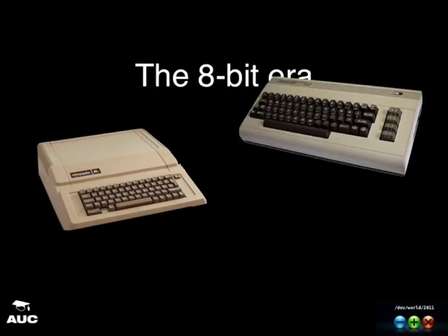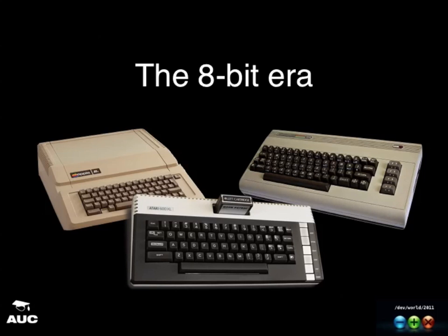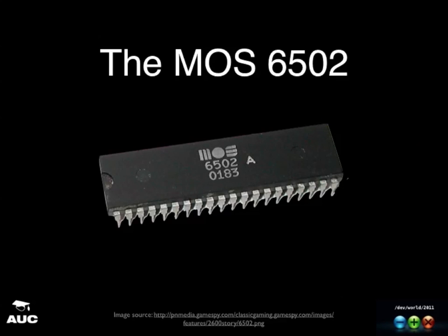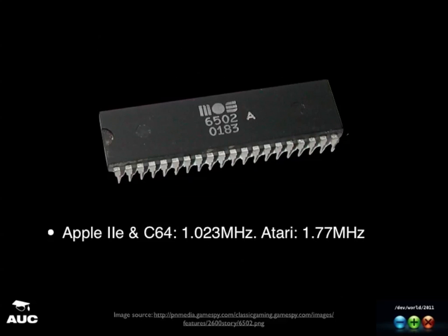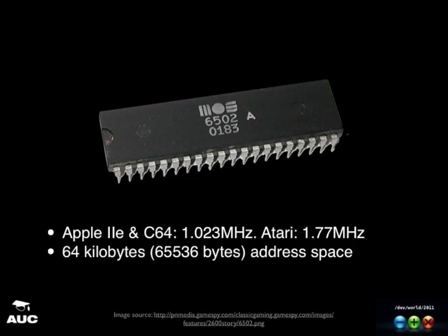So how do we manage this stuff? Let's look at the history and evolution of memory management, starting in the 8-bit era. This is the type of computer I first started programming on. The Apple IIe, the Commodore 64 — which according to the Guinness Book of World Records is the most popular computer model ever — and the Atari 600XL, the first computer I ever programmed on. All of these were based on the MOS 6502 CPU, clocked at about 1MHz, with a staggering 64 kilobytes of addressing space.